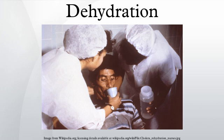Water leaves the body in many ways, categorized into either sensible water loss or insensible water loss, depending on whether the loss can be perceived by the senses. Sensible water loss includes such processes as sweating and vomiting. Insensible water loss occurs mainly through the skin and respiratory tract. In humans, dehydration can be caused by a wide range of diseases and states that impair water homeostasis in the body.